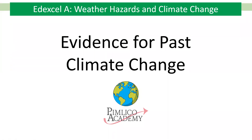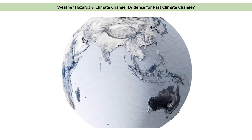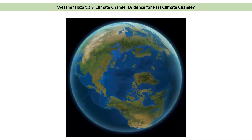This video is all about the evidence for past climate change — how do we know what the climate was like in the past and how do we know that it's been very different at certain times. Scientists believe that in the past, the Earth was at one point completely covered in ice, but at other times there was no ice anywhere on Earth, so it was a much warmer period. We know that the climate has been very different before humans came along.